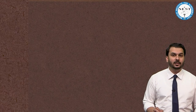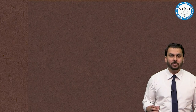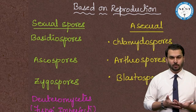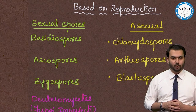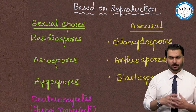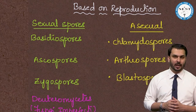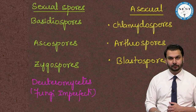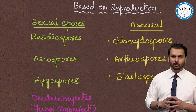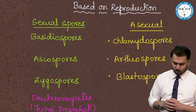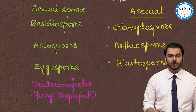Fungi can also be classified based on reproduction. Spores are divided into sexual and asexual. Sexual spores include Basidiospores (family Basidiomycetes), Ascospores (Ascomycetes), and Zygospores. Asexual spores are remembered by the mnemonic CAB: Chlamydospores, Arthrospores, and Blastospores. Important fungi belong to the category called Deuteromycetes.